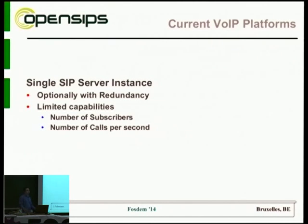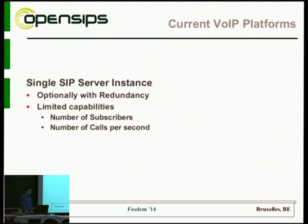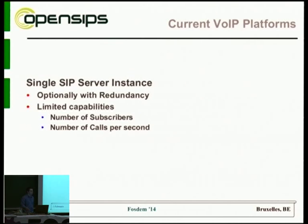First of all, let's take a look at the current status of most VoIP platforms and VoIP software. Out of the box, everything is most likely a single SIP server instance, so you're only getting capabilities for operating a single SIP server. There are ways to achieve redundancy — various types, like active backup via some virtual IP software, either VRRP or Heartbeat. But at the end of the day, you're limited in how many subscribers and concurrent calls you can handle on a single box.